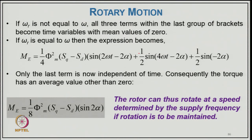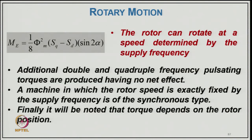If ω_r ≠ ω, all terms become time-varying with mean value of zero. If ω_r = ω, the expression becomes M = ½φ_m²·S_d·(S_q − S_d)·[sin(ωt − 2α) + ½sin(4ωt − 2α) + ½sin(−2α)], where only the last term is independent of time, giving an average torque other than zero. So M_avg = ½φ_m²·S_d·(S_q − S_d)·sin(2α), and the rotor can rotate at a speed determined by the supply frequency. The maximum average torque occurs at α = π/4. A machine whose rotor speed is exactly fixed by the supply frequency is of the synchronous type.